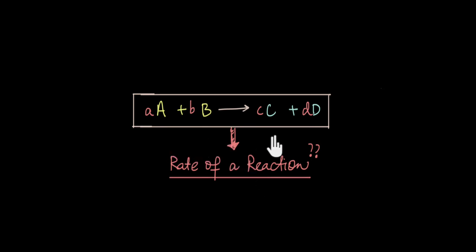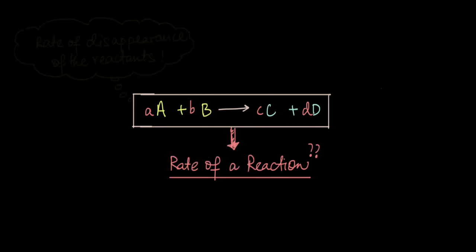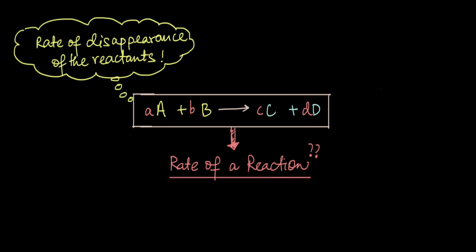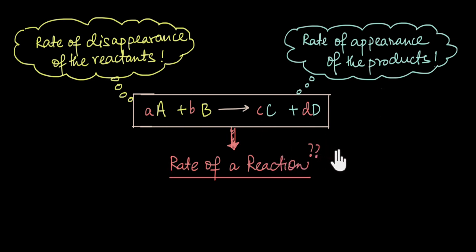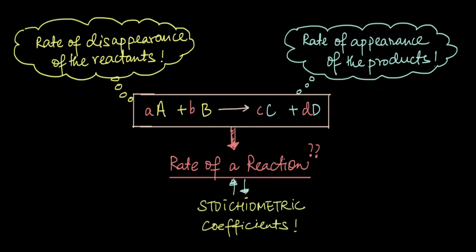In the last video, we saw that we could describe a chemical reaction in terms of the rate of disappearance of the reactants or in terms of the rate of appearance of the products. But what exactly is the overall rate of this reaction? In this video, we are going to see how we define the rate of a reaction, and we will realize that because of our definition, the rate of a reaction ultimately depends upon the stoichiometric coefficients that we use to balance our reaction.